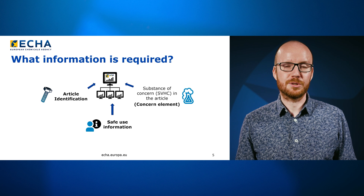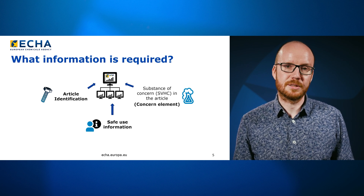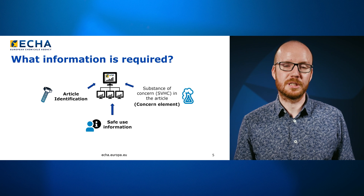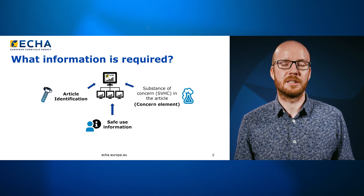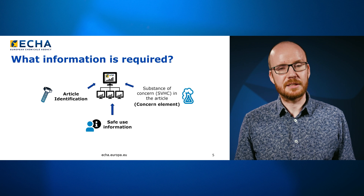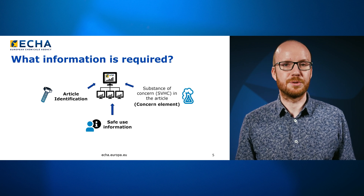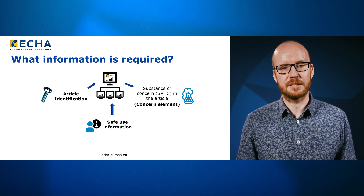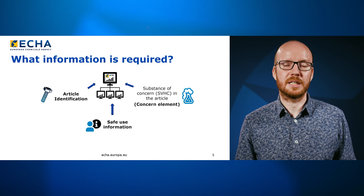And then we also need some other descriptive factors, like what is it made of — what material — and what is the product family of this type of article? And finally, we need information to describe its safe use. So these are the three main elements that need to be provided to ECHA.